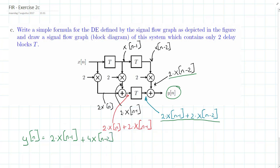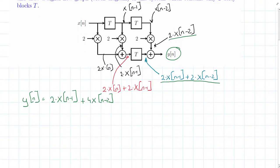What we can do is we can draw a different block diagram which does exactly the same as this one with only 2 delay blocks. If we have a look at our difference equation over here, what we can see is that we have an input, x[n].